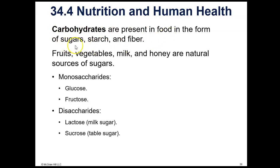Carbohydrates are present in food in the form of sugars. Sugars can be monosaccharides and they can be disaccharides. Table sugar — sucrose — is a disaccharide, and lactose, or milk sugar, is a disaccharide. The monosaccharides are glucose, which is the sugar found in our blood, and is typically used for cellular respiration in our cells. Fructose is a sugar found in fruit.